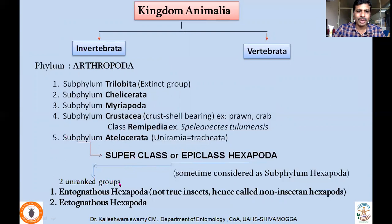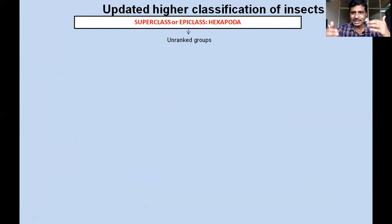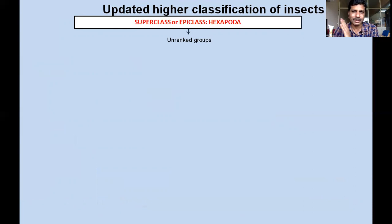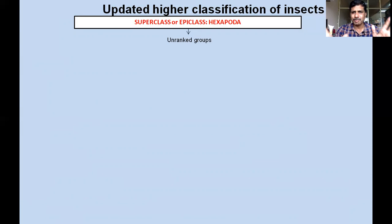Under subphylum Attilocerata, the superclass or epiclass Hexapoda is recognized now. Within this superclass Hexapoda, two unranked groups are: Entognathous Hexapoda and Ectognathous Hexapoda. Even the Christiansen classification also changed in recent times. As a result, I would like to give the updated version of classification. Sections such as Mecapterida, Neuropterida, Hymenopterida, Coleopterida are not considered at this juncture as separate ranks, and superorders are also rarely considered in entomology classification.